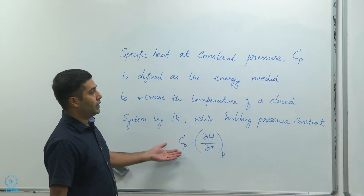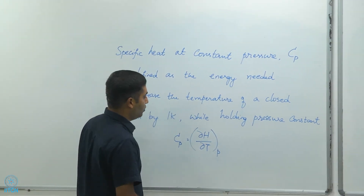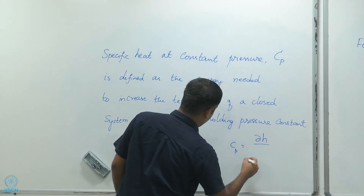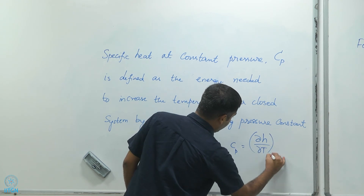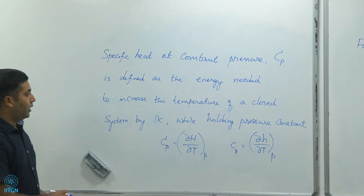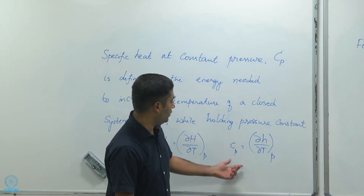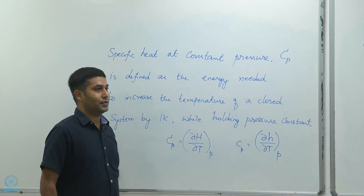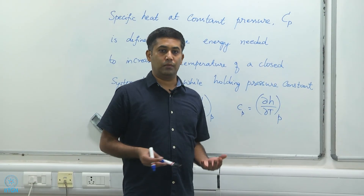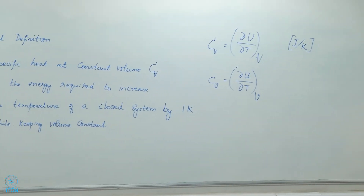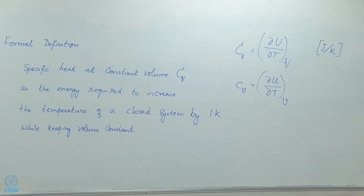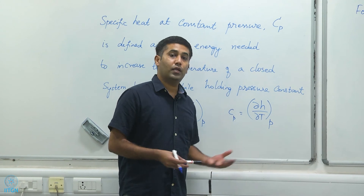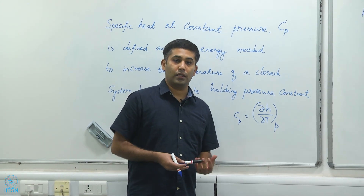Just as there is an intensive property form for Cv, I can also define an intensive Cp as the partial derivative of specific enthalpy with respect to T at constant P. This intensive form is more commonly used compared to the extensive capital Cp definition, because the extensive definition requires knowing the size of the system a priori, which is not a requirement for the intensive form. These values are tabulated for many substances, making it straightforward to perform the required integrations.